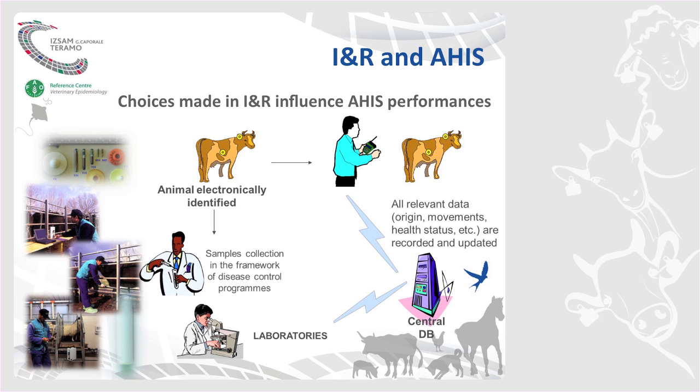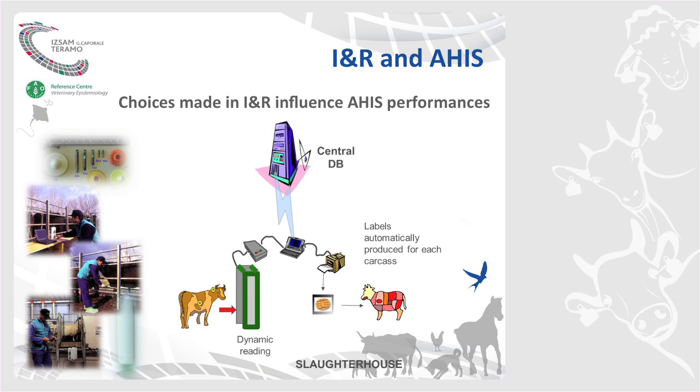Therefore, the choices that we make for the implementation of the identification registration system can and will have an influence on the performance of our animal health information system. For example, using electronic identification, I can have a more efficient data management for the purposes of the animal health information system, even along the history of the animal, even to the slaughterhouses and in this example, the meat labeling. But the influence of animal identification and registration systems is not only related to the type of identification means chosen.